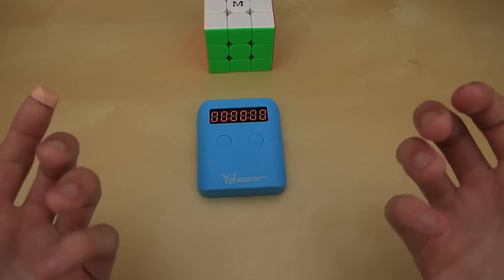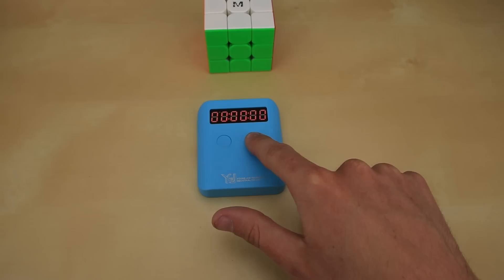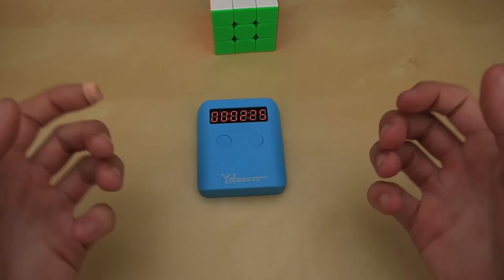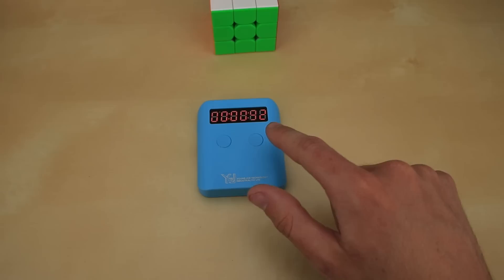You may have noticed the really obnoxious buzzer sound whenever you do anything, but that can actually be turned off by just holding down the reset button like that. Now you can do the exact same thing but without any of that annoying noise.